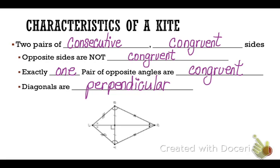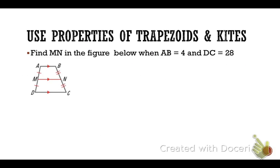Make sure you have all of these characteristics of a trapezoid and kite written down and memorized, because you will be tested over them. So let's use some of these properties.